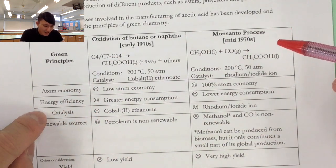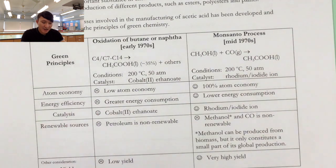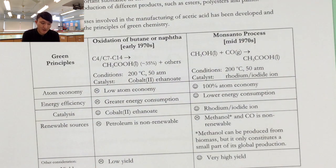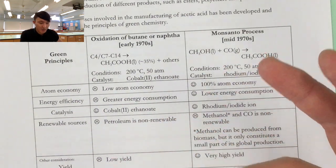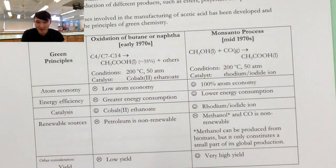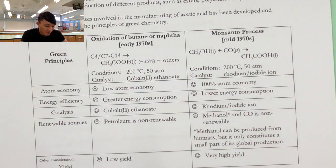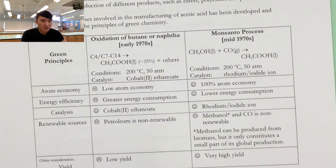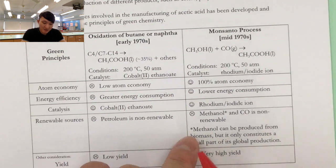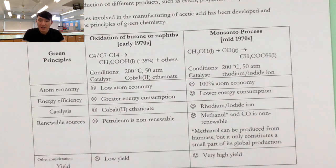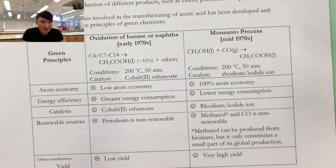When comparing energy efficiency, Monsanto process has a better energy efficiency probably because the fractional distillation of hydrocarbon is quite inefficient. It requires so much heating to do so. So catalysis, both of them use catalysts which is good. We can't compare the efficiency of the catalysts in DSE level of course. Now renewable resources, both of them are not using renewable resources. So from the green chemistry perspective, this is not a good idea. Despite the fact that methanol can be produced from biomasses, it only constitutes a very small portion that is actually negligible.